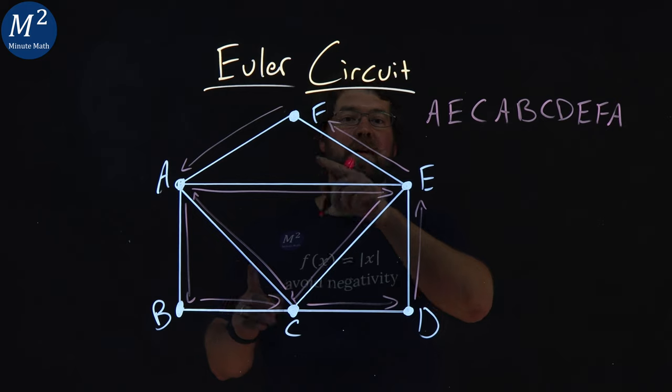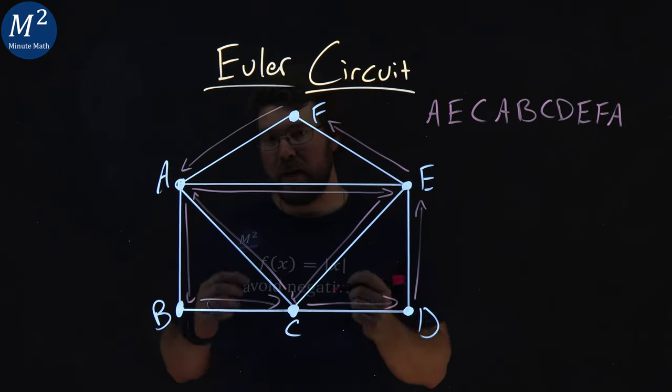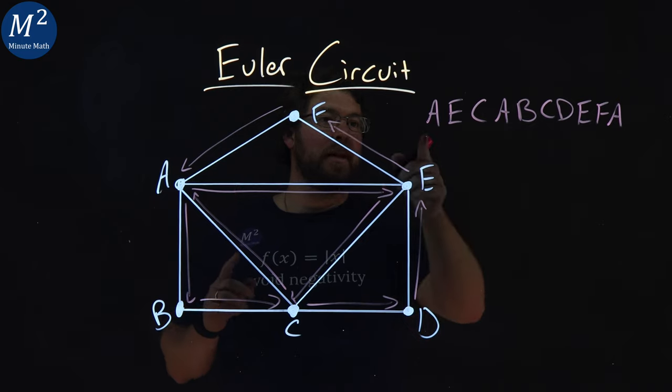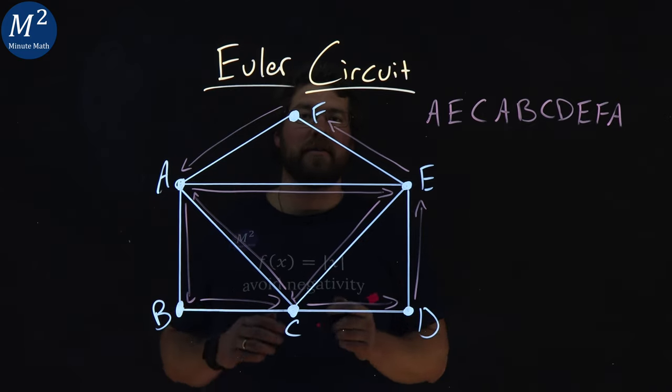And we can see we have hit every single edge. We repeated none of them, and we started back at the beginning, completing our Euler circuit.